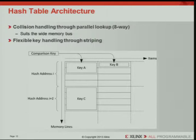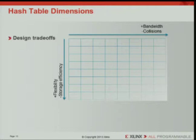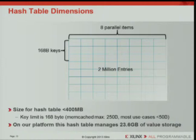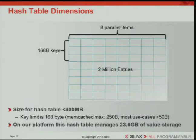Going in a bit more depth on the hash table: it does collision handling using a bucket size of eight, performs a parallel lookup in memory, and supports flexible key sizes by striping them over multiple memory locations. That's a design trade-off — throwing memory bandwidth at the problem to reduce the probability of collisions, and trading storage efficiency to support the flexibility of different key sizes. With this approach we achieved a hash table with 2 million entries in less than 400 MB, supporting up to 168-byte keys covering the most common key value store use cases, with 23.6 gigabytes of value store that could easily be scaled further.